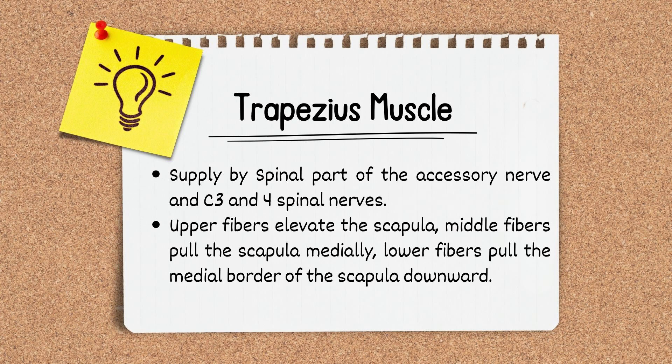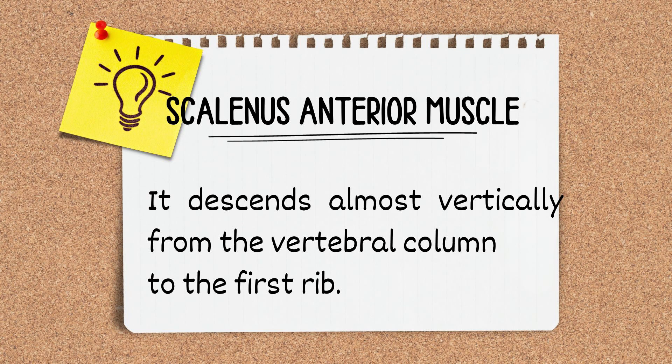The trapezius muscle is supplied by the spinal part of the accessory nerve and C3 and C4 spinal nerves. The function of the trapezius muscle is to elevate the scapula, which is done by the upper fibers, whereas the lower fibers pull the scapula downwards. The middle fibers of the trapezius muscle pull the scapula medially.